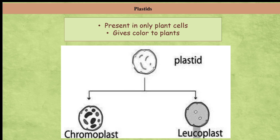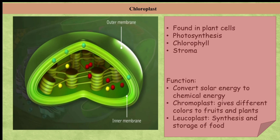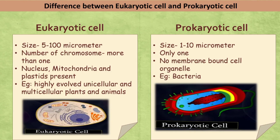The next organelle is chloroplast, found in plant cells. Chloroplasts are important for the photosynthesis process that takes place in leaves. Chlorophyll in the chloroplast traps solar energy and converts it into chemical energy. Stroma is an alkaline aqueous, protein-rich fluid present within the inner membrane of the chloroplast. It contains enzymes, DNA, ribosomes, and carbohydrates necessary for photosynthesis. The functions of chloroplast are: to convert solar energy to chemical energy for making food, to give different colors to flowers and fruits, and leukoplasts are involved in synthesis and storage of food like starch, oils, and proteins.